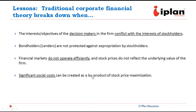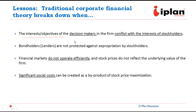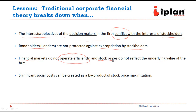So, what are the lessons? First, the interest or objectives of decision makers in the firm can conflict with the interest of stockholders. Second, bondholders are not protected against expropriation by stockholders. Third, the financial markets may not operate efficiently, and thus the stock prices will not reflect the true value of the firm. And finally, the social costs are very significant. So, in any of these cases, the traditional theory will break down.